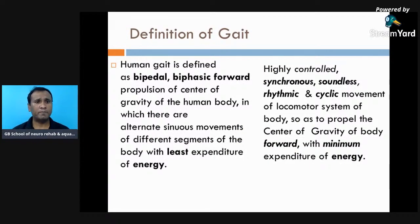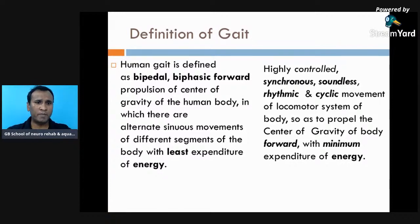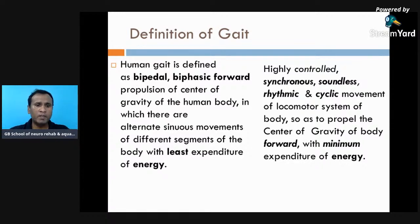Start with the definition of gait. Human gait is defined as bipedal, biphasic forward propulsion of the center of gravity of the human body, in which there are alternate sinuous movements of different segments of the body with least expenditure of energy.